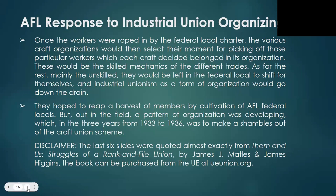Once workers were roped in by the federal local charter, the various craft organizations would then select their moment for picking off those particular workers which each craft decided belonged to its organization — the skilled mechanics of the different trades. As for the rest, mainly the unskilled, they would be left in the federal local to shift for themselves, and industrial unionism as a form of organization would go down the drain. But out in the field, a pattern of organization was developing which in the three years from 1933 to 1936 was to make shambles out of the craft union scheme. The last six slides were quoted almost exactly from 'Them and Us: Struggles of a Rank and File Union' by James J. Matles and James Higgins. The book can be purchased from the UE at ueunion.org.